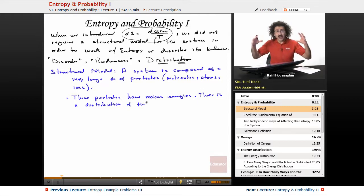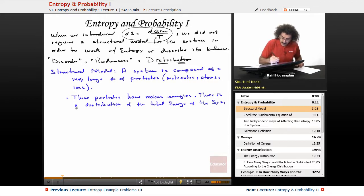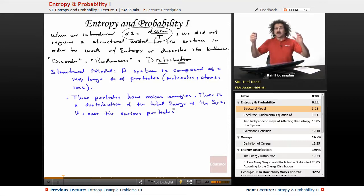And there is a distribution of the total energy of the system, the U, of the total energy of the system, which is U, first law, over the various particles. The total energy of the system is made up of the sum of all the individual energies of the particles. If a system has 100 joules of energy, well, those 100 joules are going to be distributed among the different particles in different ways. Maybe two particles might have one energy. Two particles might have another energy. 15 particles might have another energy. All the different energies, that's the distribution.